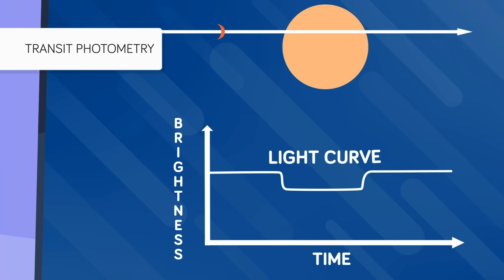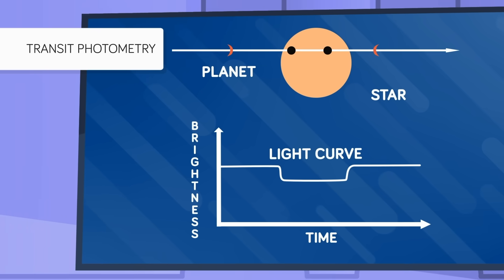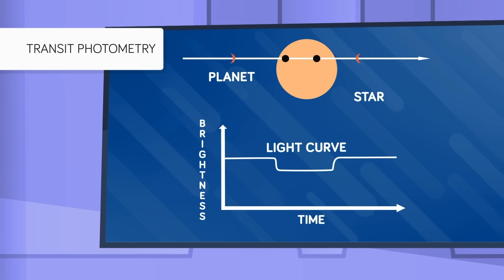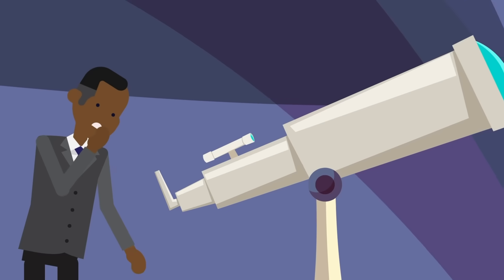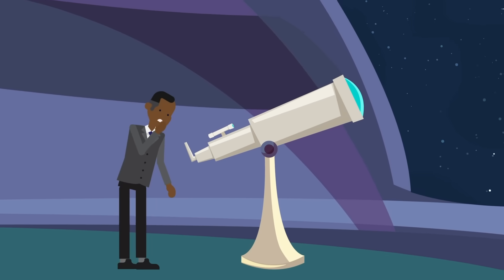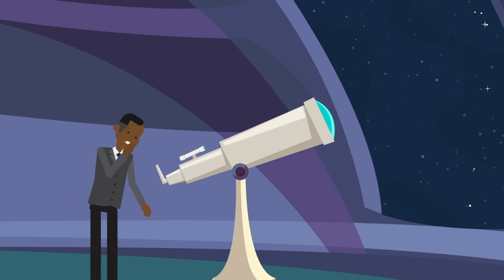Another option is to use a method similar to how we hunt for planets in other solar systems. We can't directly image planets around distant stars. Instead, we carefully observe those stars for long periods of time, and then look for shifts in the total amount of light the star is giving out.